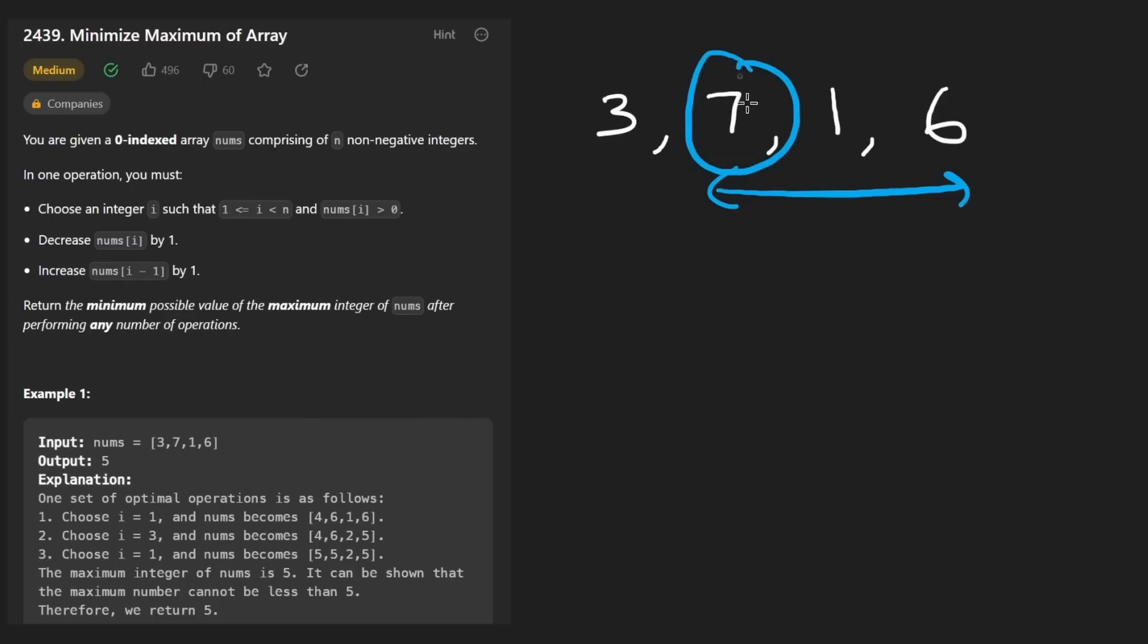Suppose it's this guy. We're going to decrement it by one, minus one. So this is now going to be six. And we take that one that we decremented and actually move it over to the left over here. So this is going to be plus one now, four.